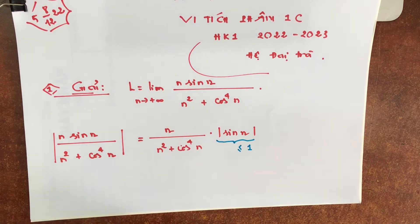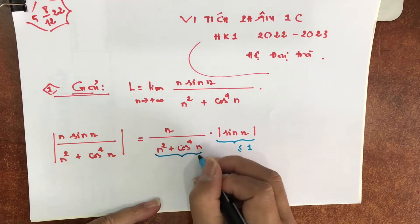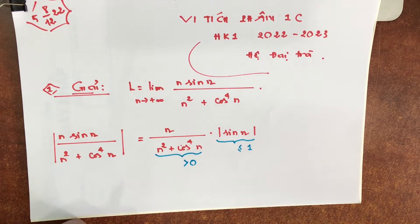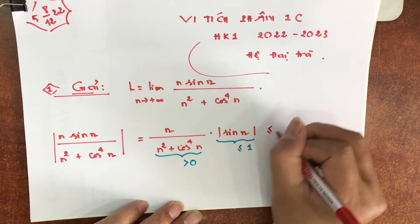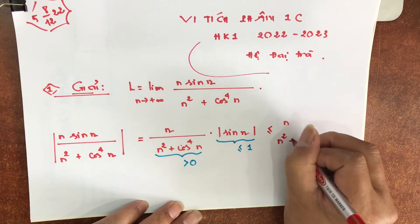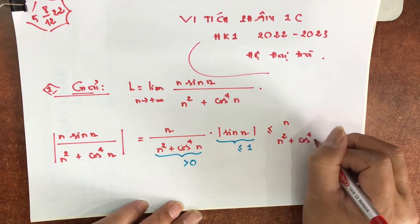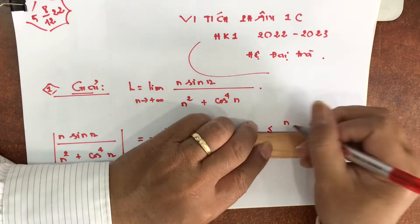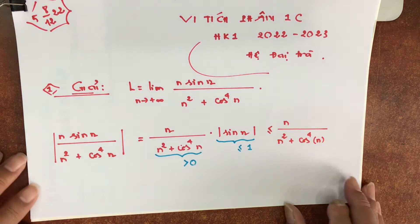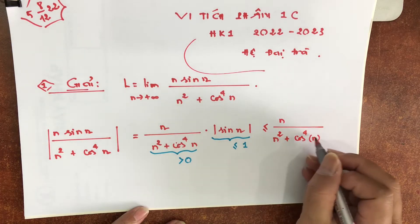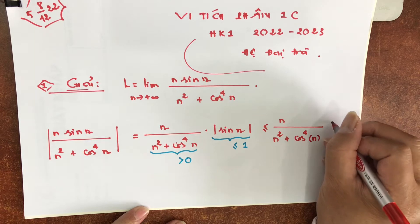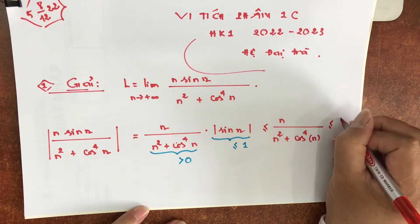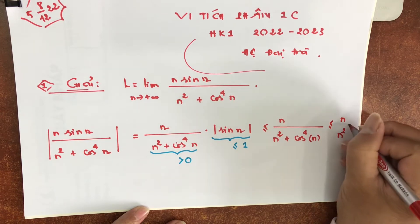Không âm và bằng 1. Và để ý là cái số hạng phía trước thì nó dương, lớn bằng 1. Cho nên chúng ta thấy rằng là bé hơn hoặc bằng n chia n bình cộng với cốt mũi 4. Và ngoài ra chúng ta để ý là n bình cộng với cốt mũi 4 thì lớn hơn hoặc bằng n bình. Cho nên ở đây sẽ bé hơn hoặc bằng n chia n bình, tức là 1 chia n.